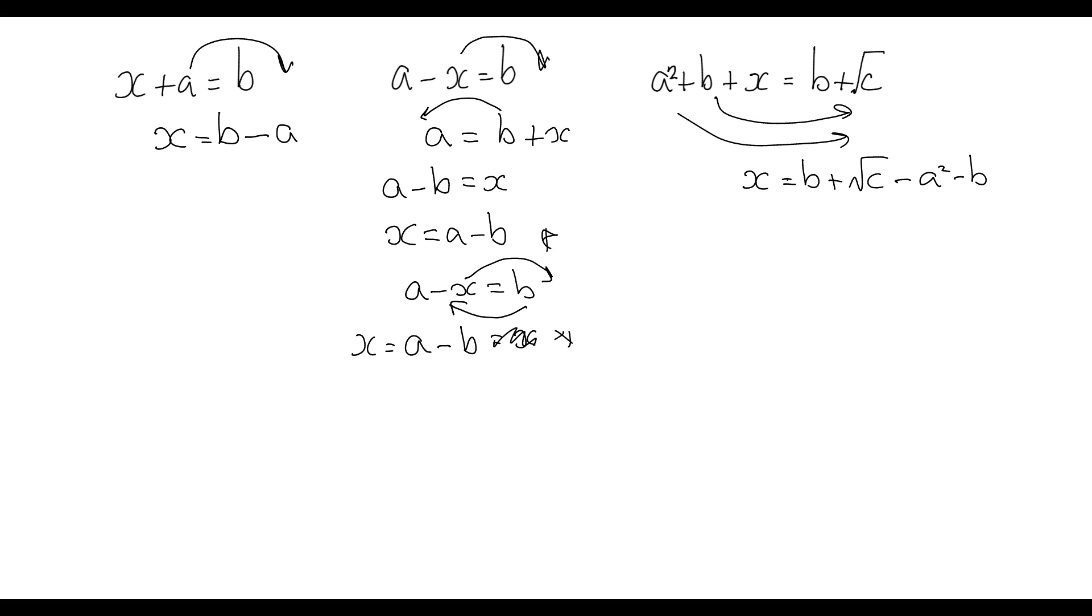And it's been joined by minus a squared minus b. What we notice on the right-hand side now is that we have two b terms. We've got this positive b at the start and the minus b at the end. They cancel each other out to leave us with x equals root c minus a squared.